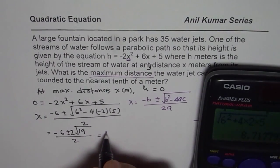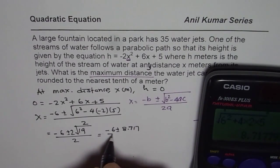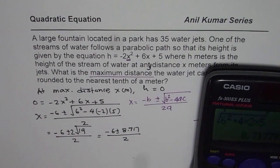And then what we got is the decimal value: minus 6 plus minus 8.717 divided by 2.